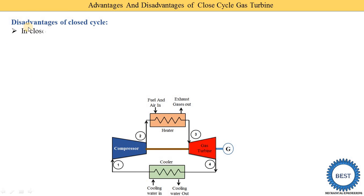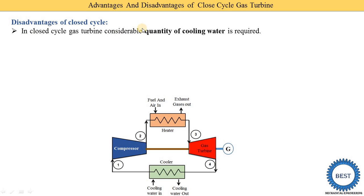The next topic is the disadvantages of closed cycles. The first disadvantage is that a considerable quantity of cooling water is required. Here you can see in this cooler, cooling water flows in and out to absorb heat energy from the working fluid. Due to this water requirement, closed cycle gas turbines are not used in aircraft, meaning aviation industries use only open cycle gas turbines.